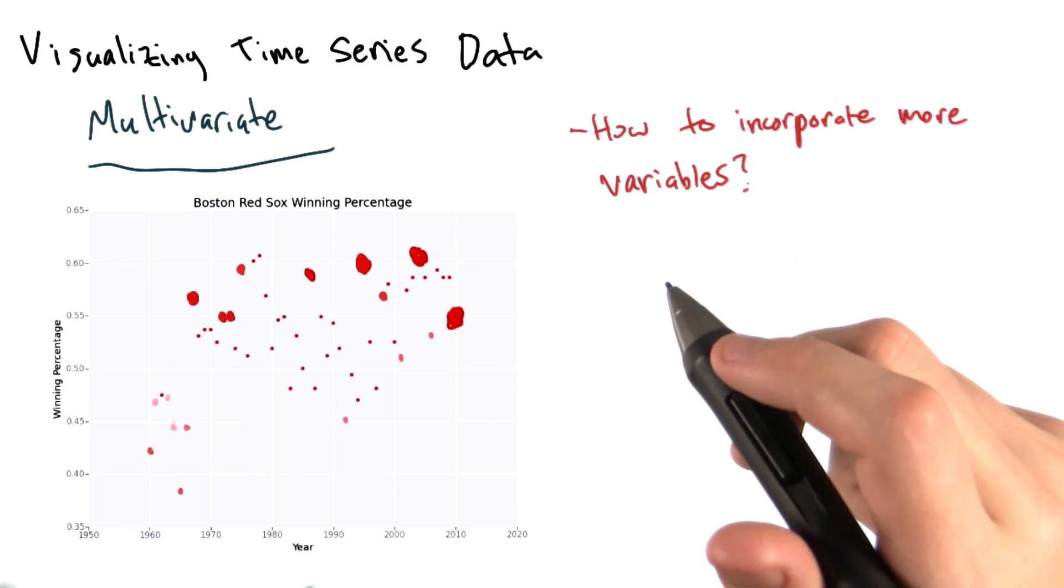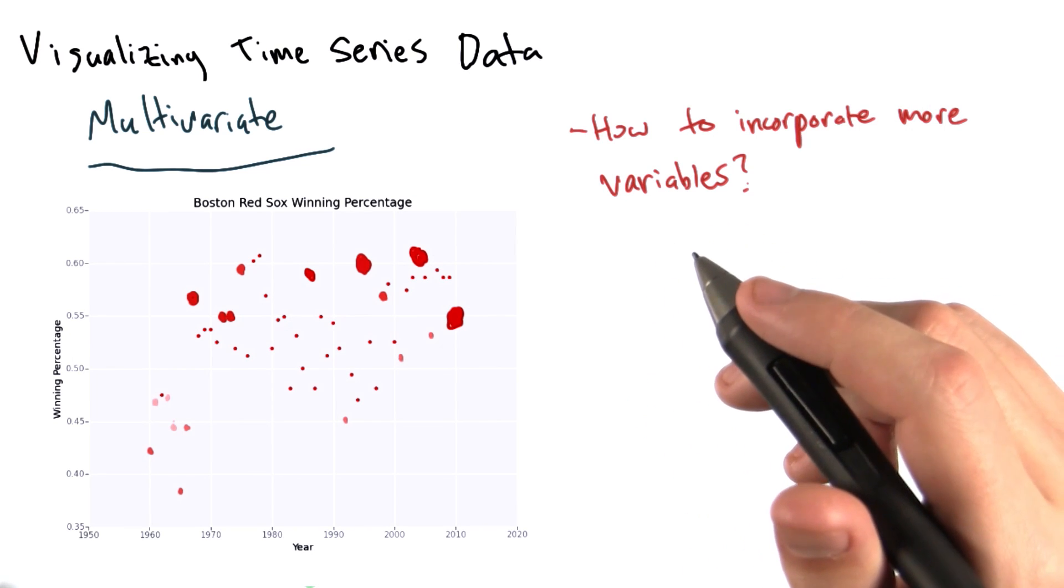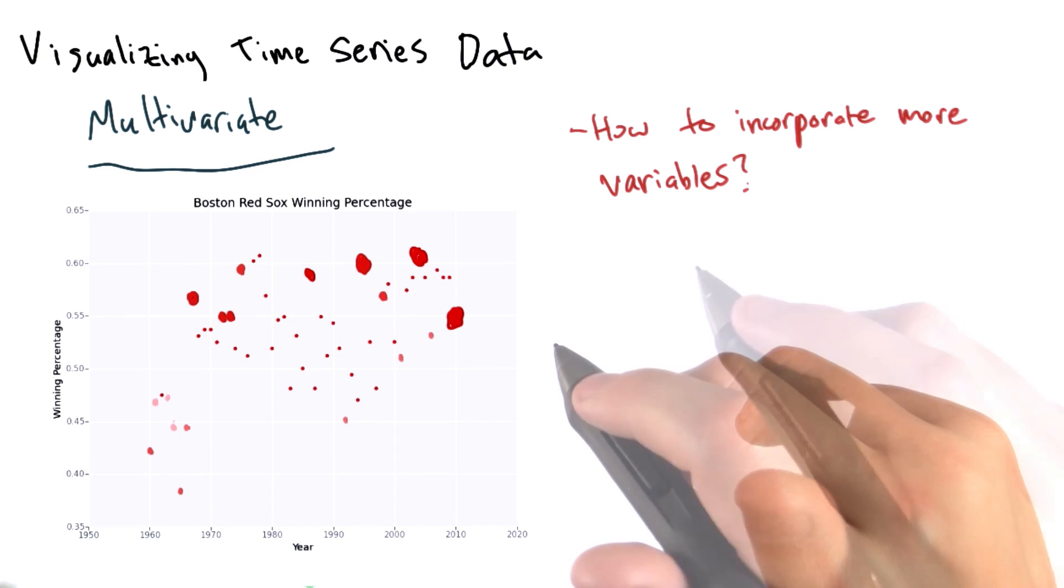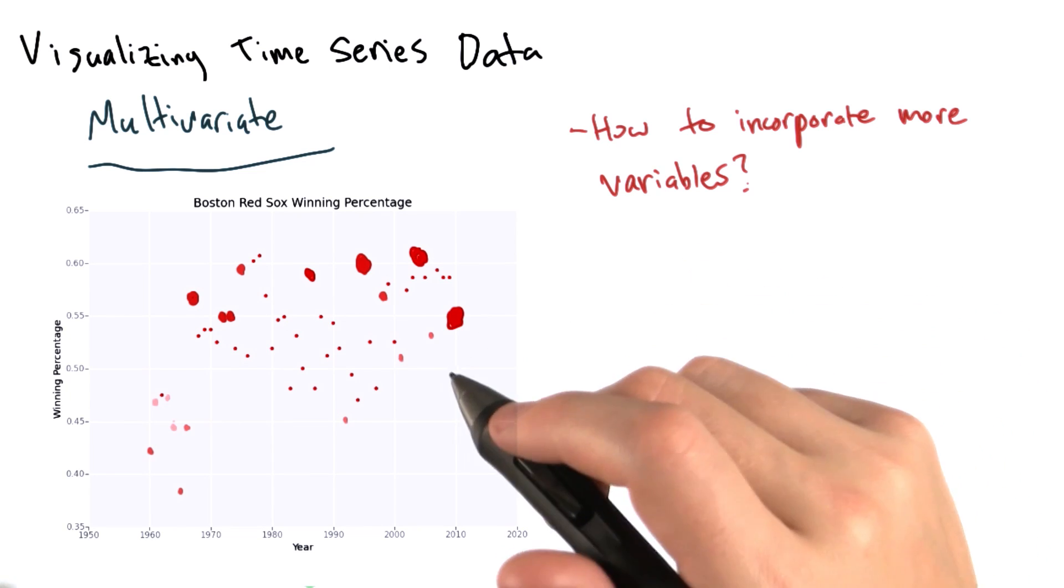One way is that we can use the visual cues that we're familiar with to encode even more information into the chart. For example, let's go back to our scatter chart.